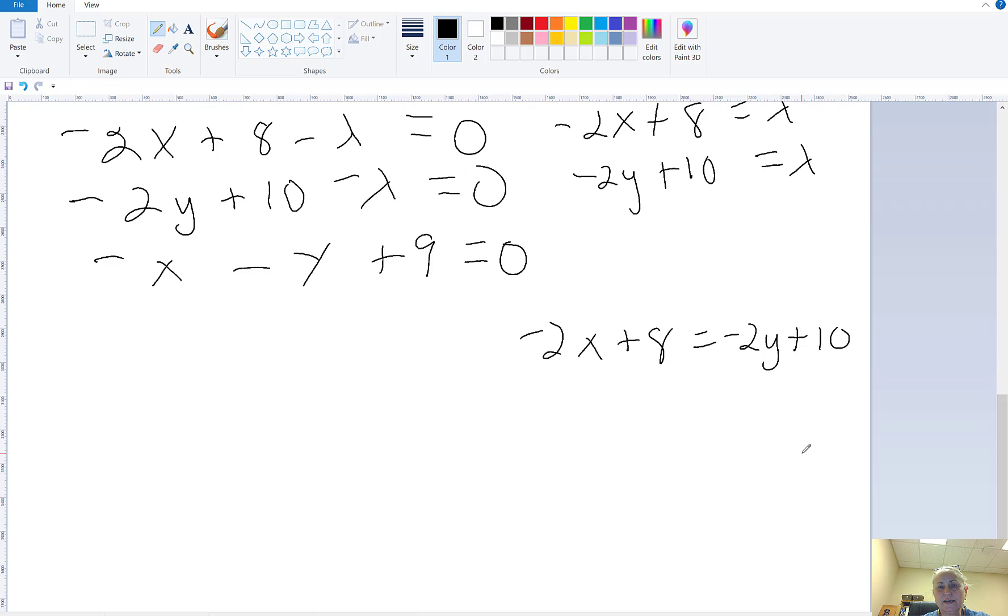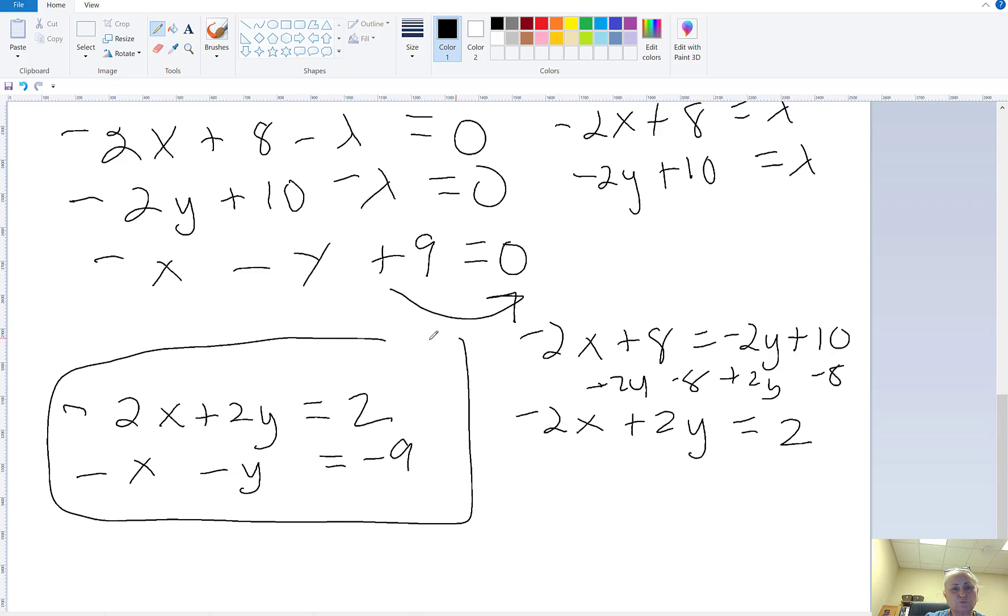And so I'll make that negative 2x plus 2y by adding 2y to both sides, and subtracting 8 from both sides, I get that equal to 2. So now I have negative 2x plus 2y equals 2, and I have negative x minus y equals negative 9, because I move this 9 over. And I've got two equations with two unknowns.